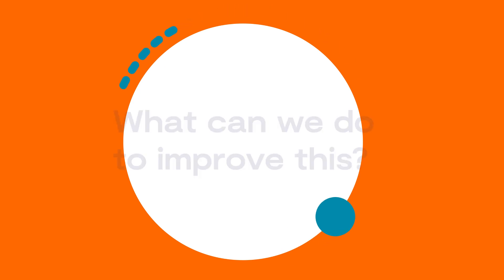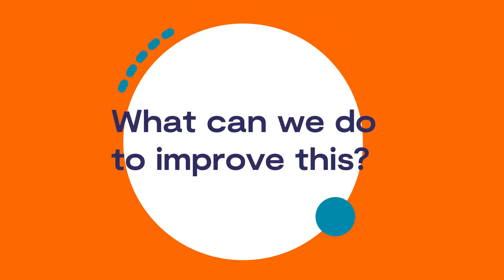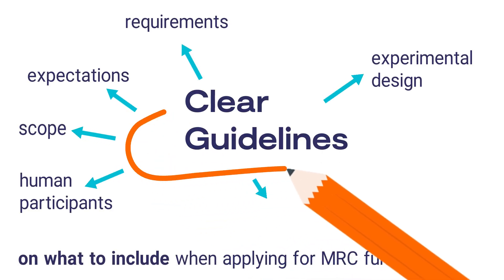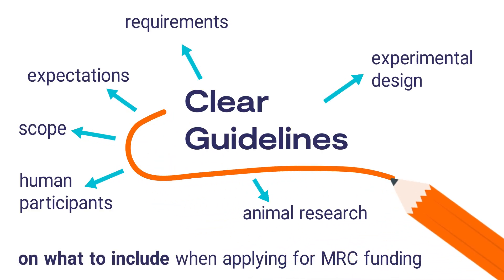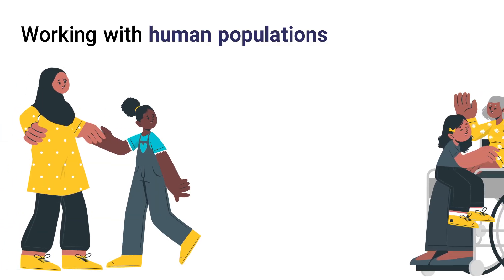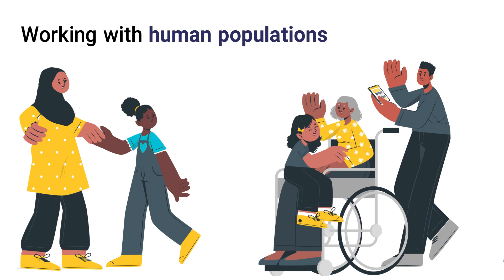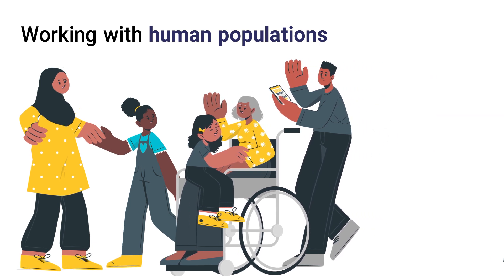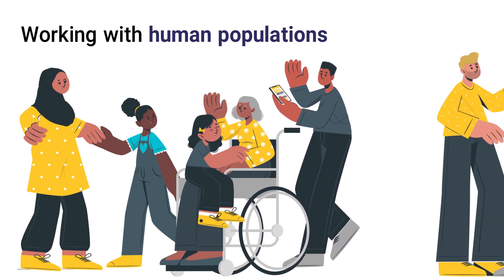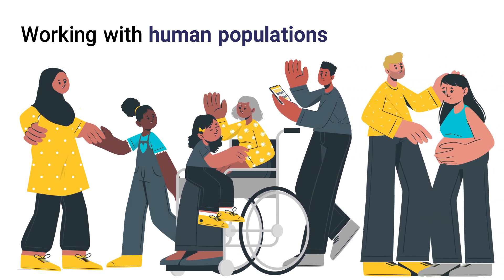So what can we do to improve this? We need clear guidelines on how to design and carry out research that is inclusive. When working with human populations, you must consider who should benefit from the research and ensure that they are included in your study.